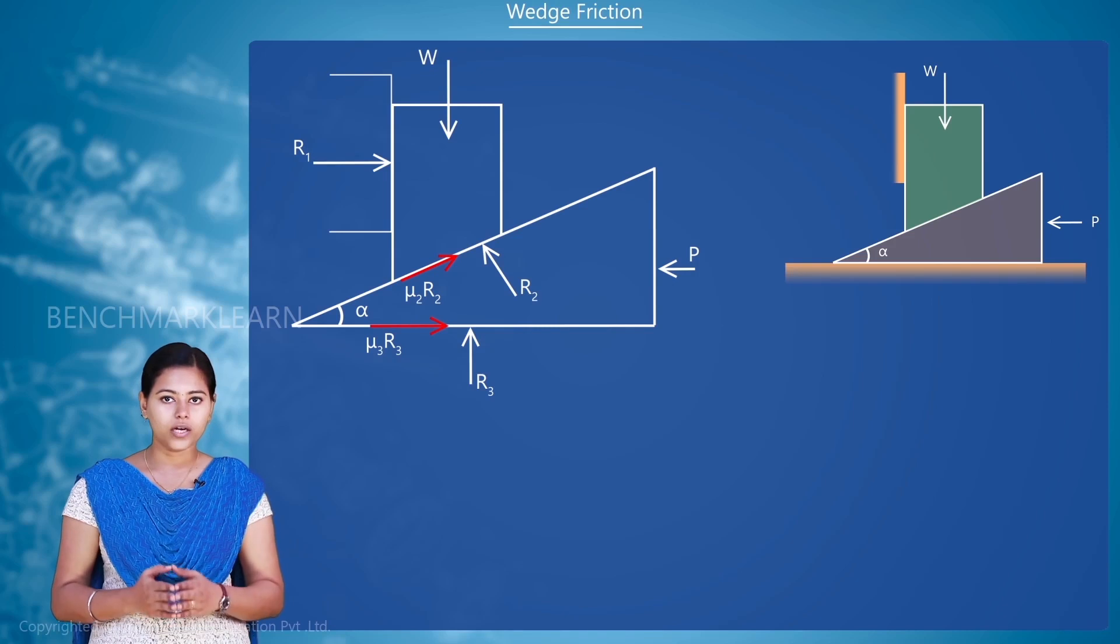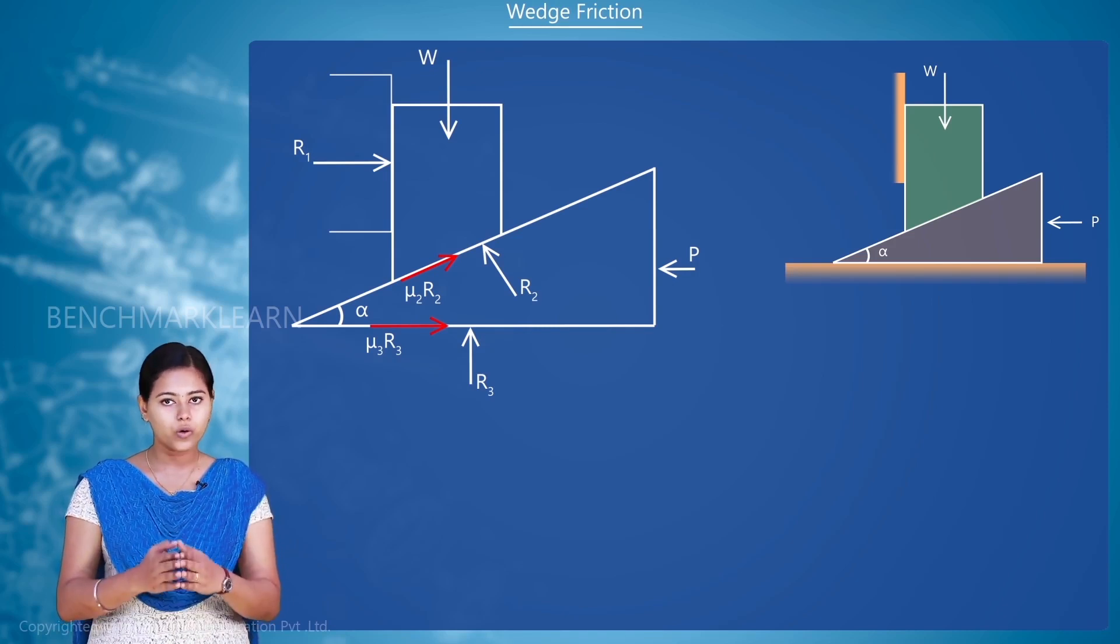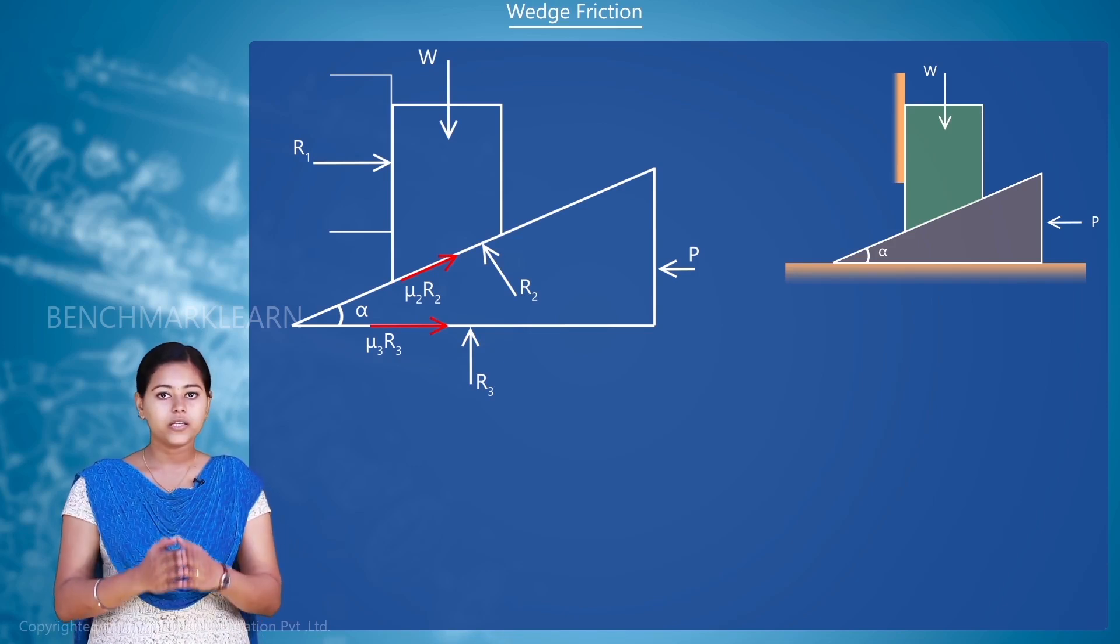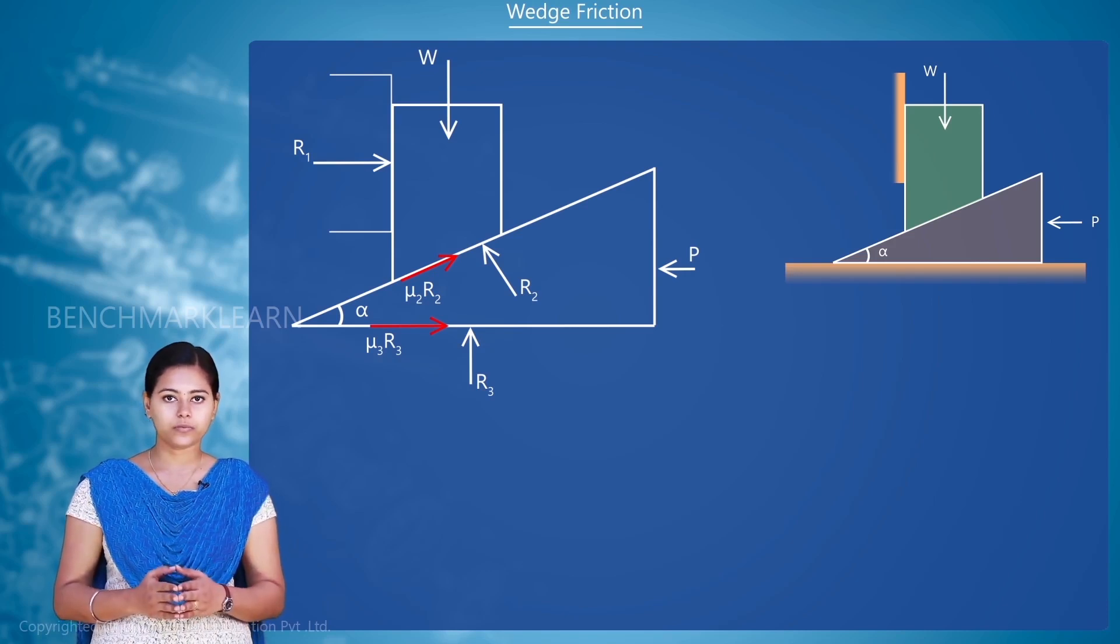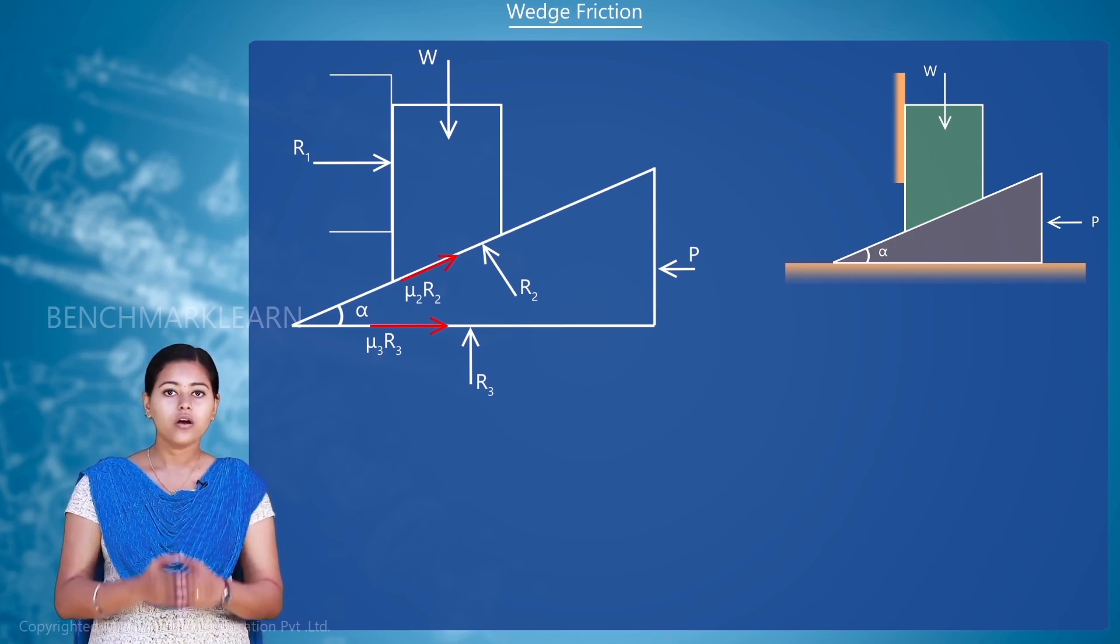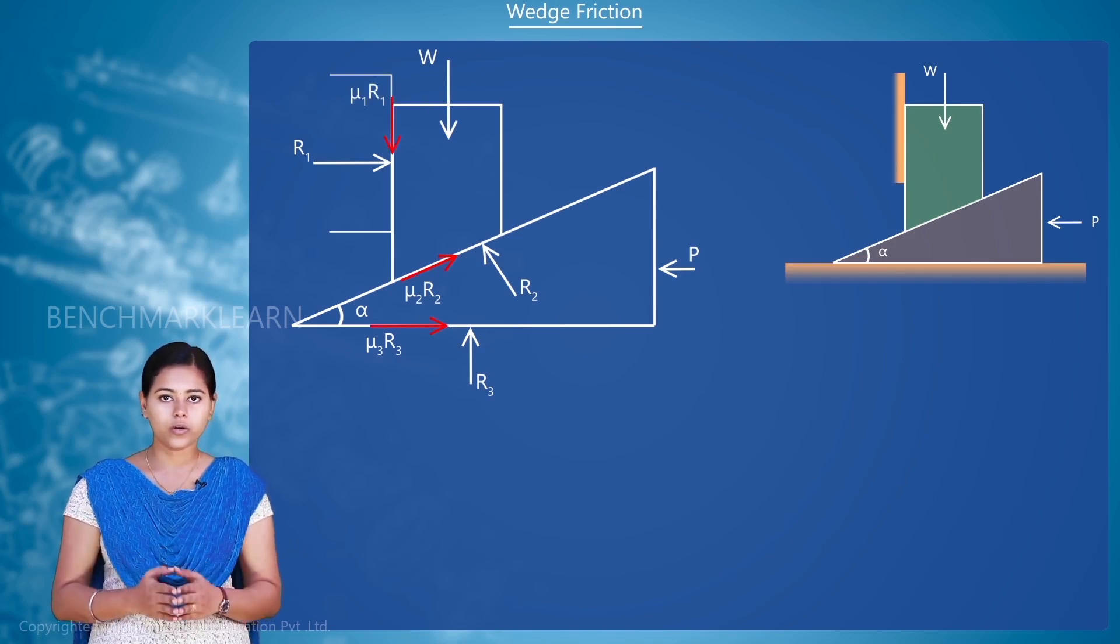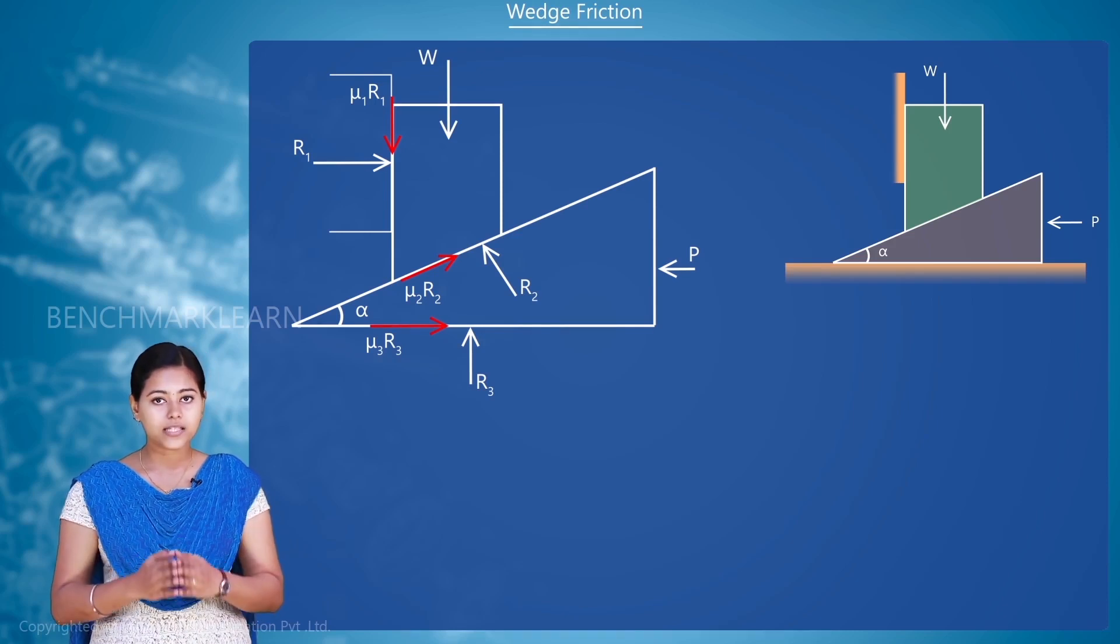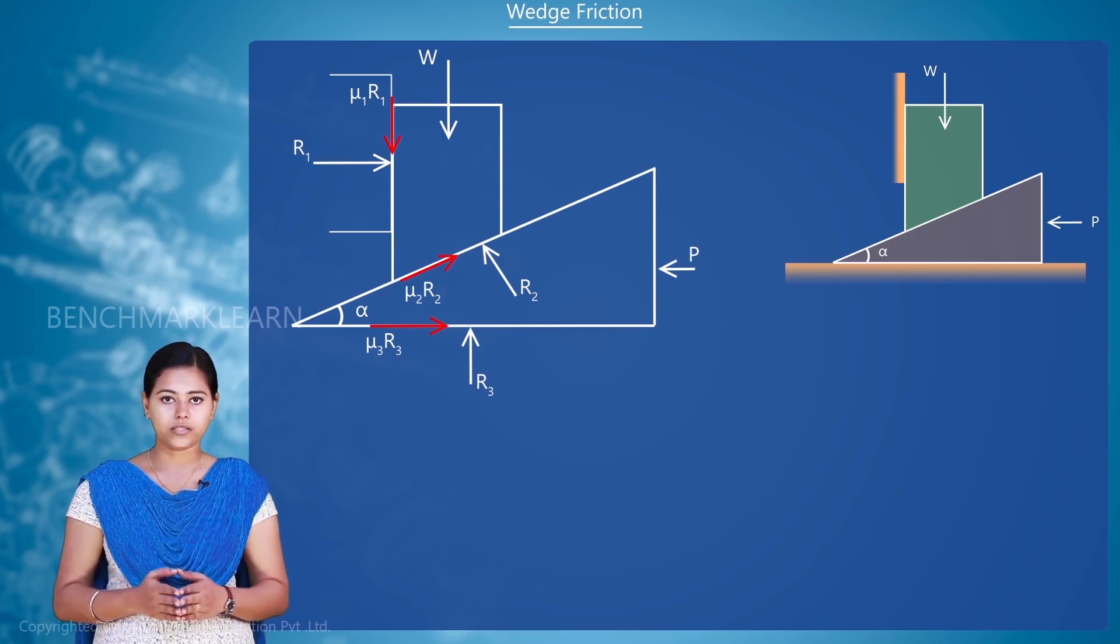Now, a reaction R1 is acting on the body due to the vertical support provided. Also, due to the sliding up, there is a relative motion between the weight and the vertical support. Therefore, a frictional force equal to mu1R1 will be acting at that contact surface and its direction will be downwards, that is opposite to the motion of the weight.